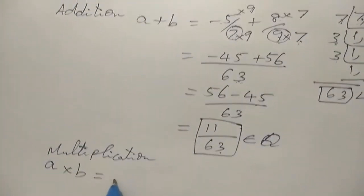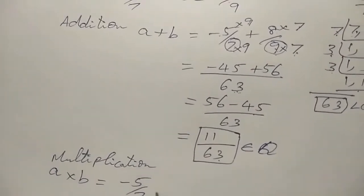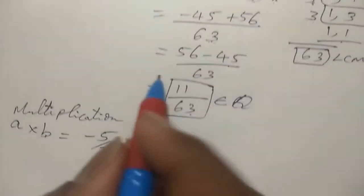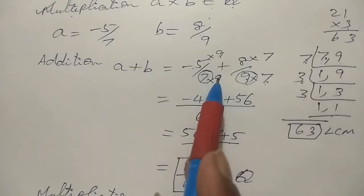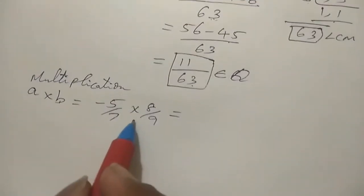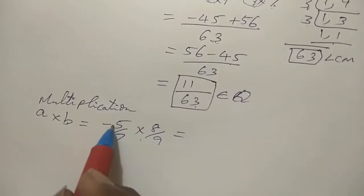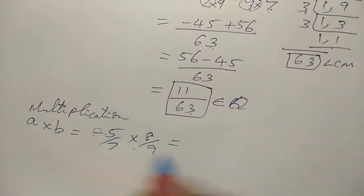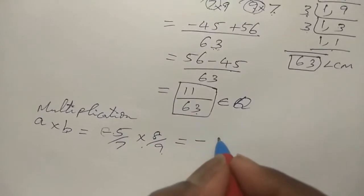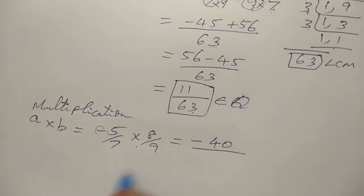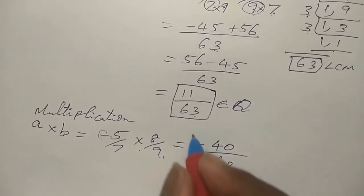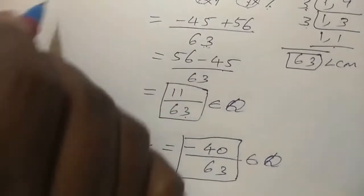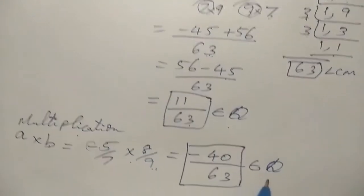A into B equals minus 5 by 7 into 8 by 9. For multiplication, we directly multiply — no LCM needed. We multiply the numerators: minus 5 into 8 gives minus 40. We multiply the denominators: 7 into 9 gives 63. So the answer is minus 40 by 63, which is again a fraction and a rational number. So for both addition and multiplication, we got rational numbers.